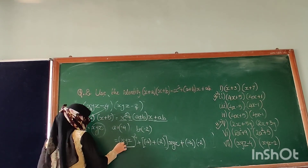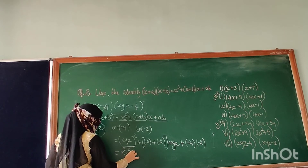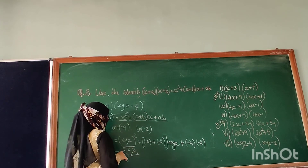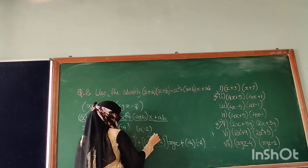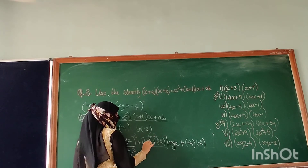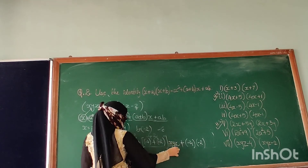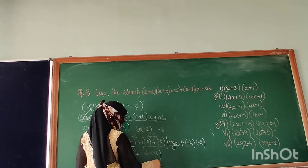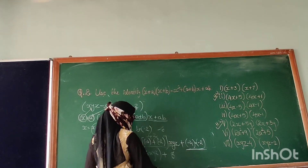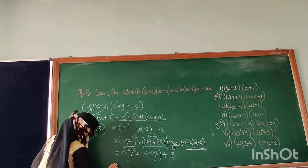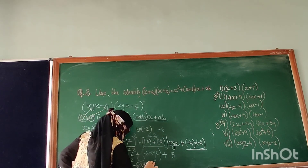Now solve this bracket. So (xyz) whole squared means x squared y squared z squared. Plus: solve this bracket — minus 4 plus minus 2. Both are negative, so 4 plus 2 is 6, and both are negative, so minus 6 xyz. Plus: these two are in multiplication, so minus 4 times minus 2 — minus times minus is plus — equals 8. So the simplified answer is x squared y squared z squared minus 6xyz plus 8.